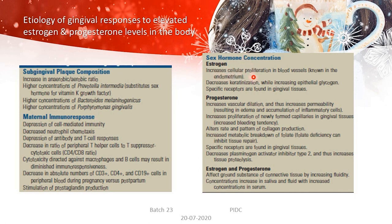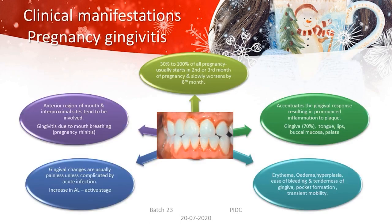Sex hormones also play a role: estrogen increases cellular proliferation in blood vessels and decreases keratinization, while progesterone increases vascular dilation, permeability, and proliferation of newly formed capillaries in gingival tissues, alters the rate and pattern of collagen production, and decreases plasminogen activator inhibitor type 2, thus increasing tissue proteolysis. Together, they can affect the ground substance of the connective tissue, and increased concentrations of these hormones are present in saliva and serum.